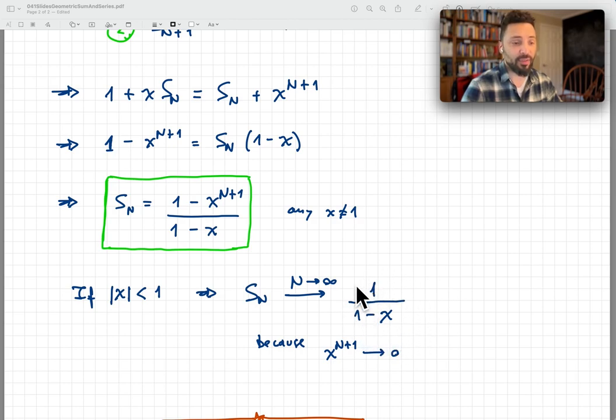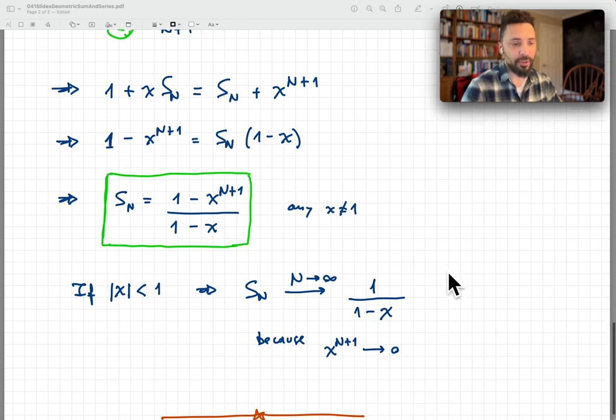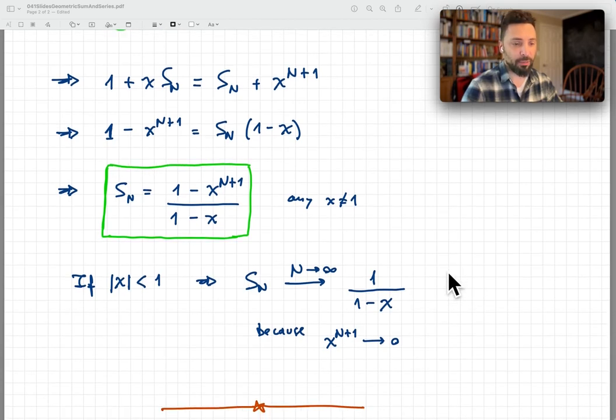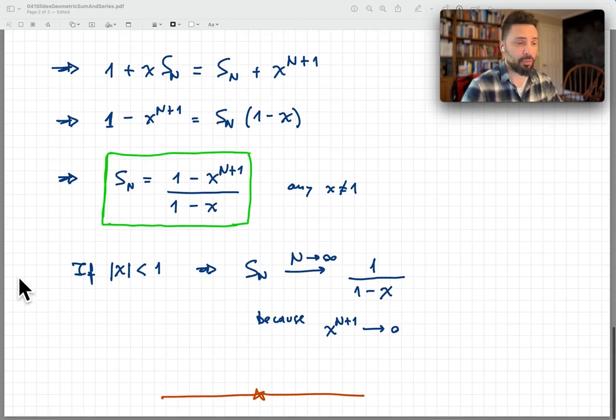So this is the sum then of the geometric series of powers of x, x to the k, starting from k equals 0 all the way to infinity. And again, this is simply because x to the power n plus 1, as long as the magnitude of x is less than 1, is 0. So this limit x to the n plus 1 is 0, and so we're left with S_n going to 1 over 1 minus x. And that is it. That was this quick reminder. That's all I have for you today.